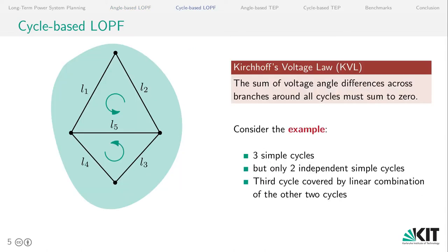The main statement of Kirchhoff's voltage law is that the sum of voltage angle differences across branches around all cycles in the network must sum up to zero. And this smells a lot like we can profit from using graph theory. So consider the example on the left-hand side, which is a very simple network, where we have three simple cycles.